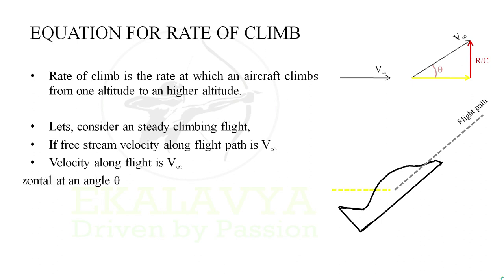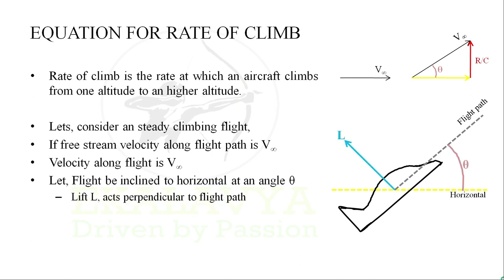Let flight be inclined to horizontal at an angle theta. Lift L acts perpendicular to flight path acting upwards. Drag D acts parallel to flight path opposite to flight motion. Thrust T is along flight path. Weight W acts vertically downwards, always towards center of the earth.